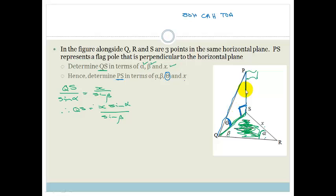And we want PS, which is the flagpole, in terms of theta and all these things here. So what we wanted in terms of is theta and QS. This is the opposite side, and this is the adjacent side with respect to this angle. So that means that we're looking at tan. So tan of capital theta is equal to opposite, which is PS, over adjacent, which is QS. Therefore, PS is equal to QS tan of our capital Greek letter. But QS is x sin alpha over sin beta.